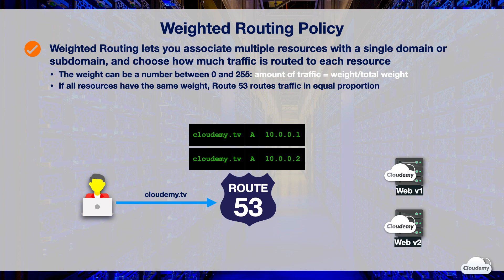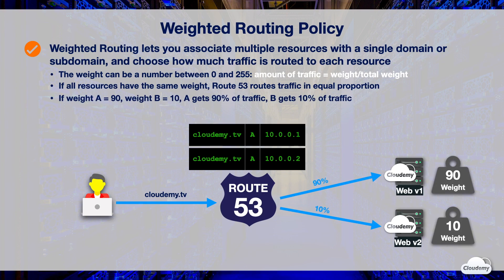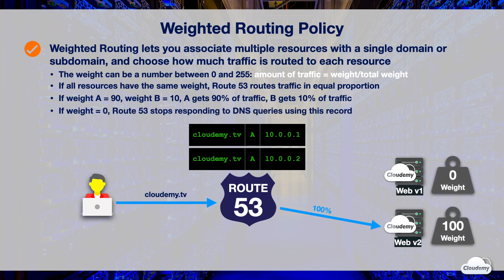You typically want to send a small proportion of traffic to the new version while sending most traffic to the old version. Suppose you have two software versions, V1 and V2. You can use Route 53 for Canary Release by setting the weight of V1 to 90% and V2 to 10%, so that V1 still gets 90% of traffic and V2 gets 10%. When you're ready for a full release of V2, you can let Route 53 stop routing traffic to V1 by setting its weight to 0. If you set the weight to 0, Route 53 stops responding to DNS queries using this record, and all traffic goes to V2.